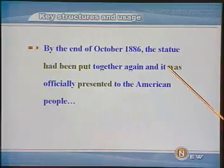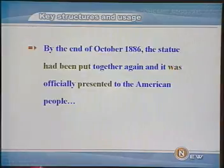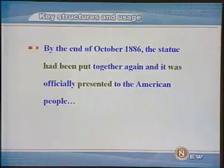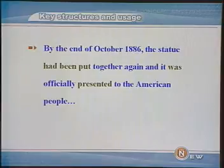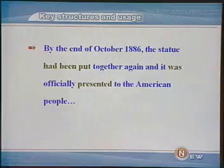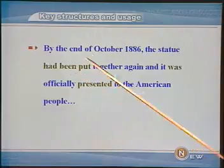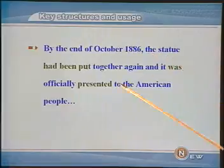再请看：By the end of October 1886, the statue had been put together again, and it was officially presented to the American people. 到1886年10月底，雕像再一次被组装完毕，正式赠送给美国人民。这句话中也出现了两次被动语态。